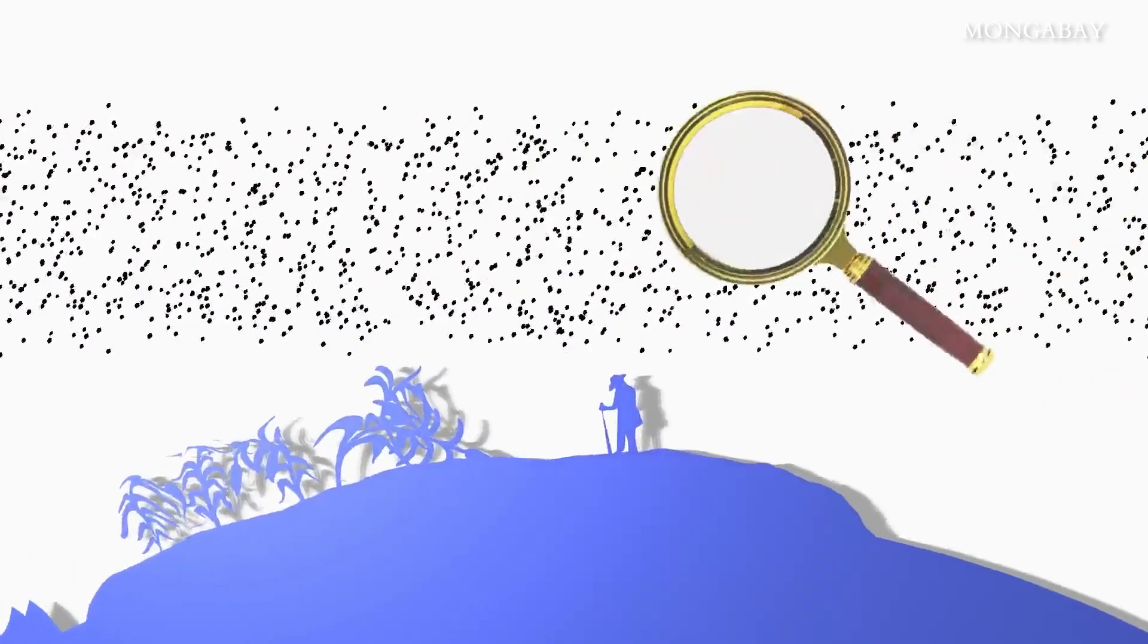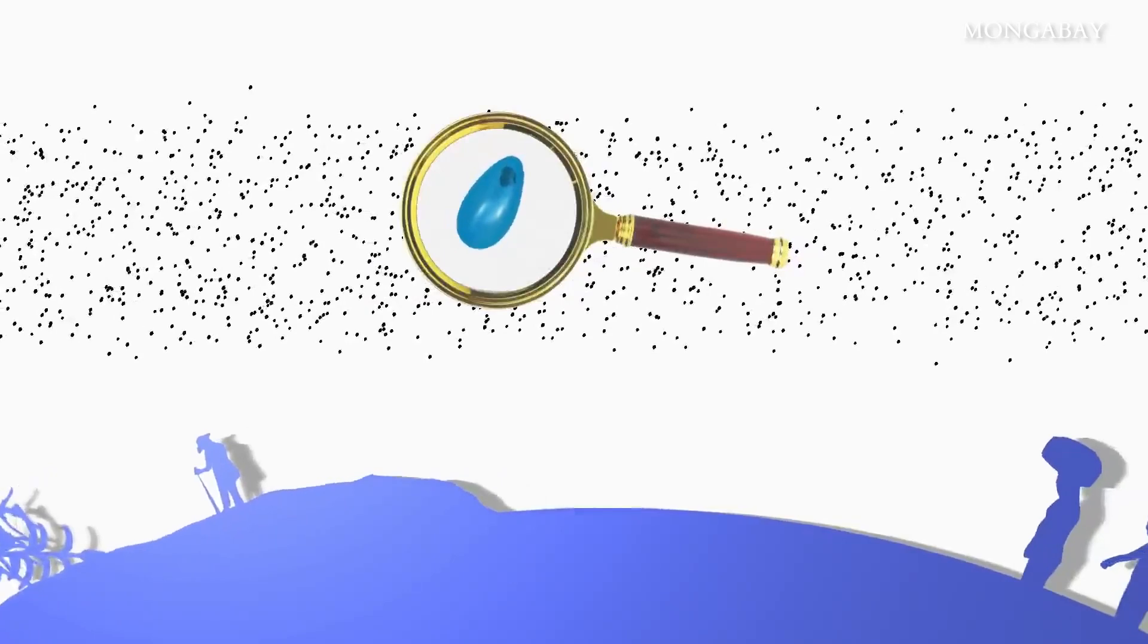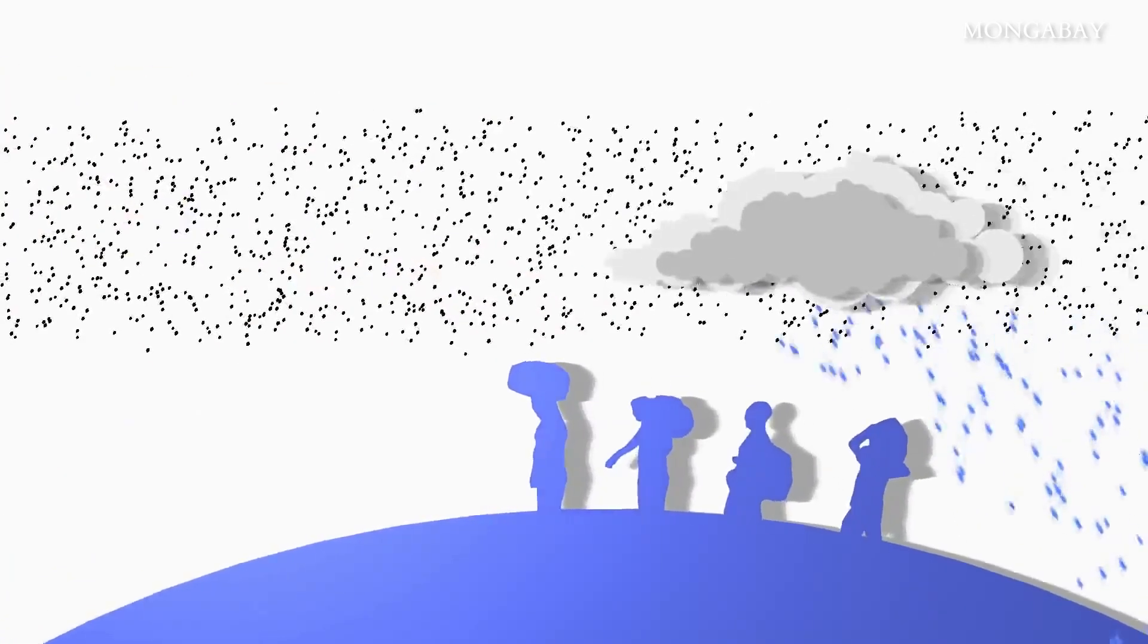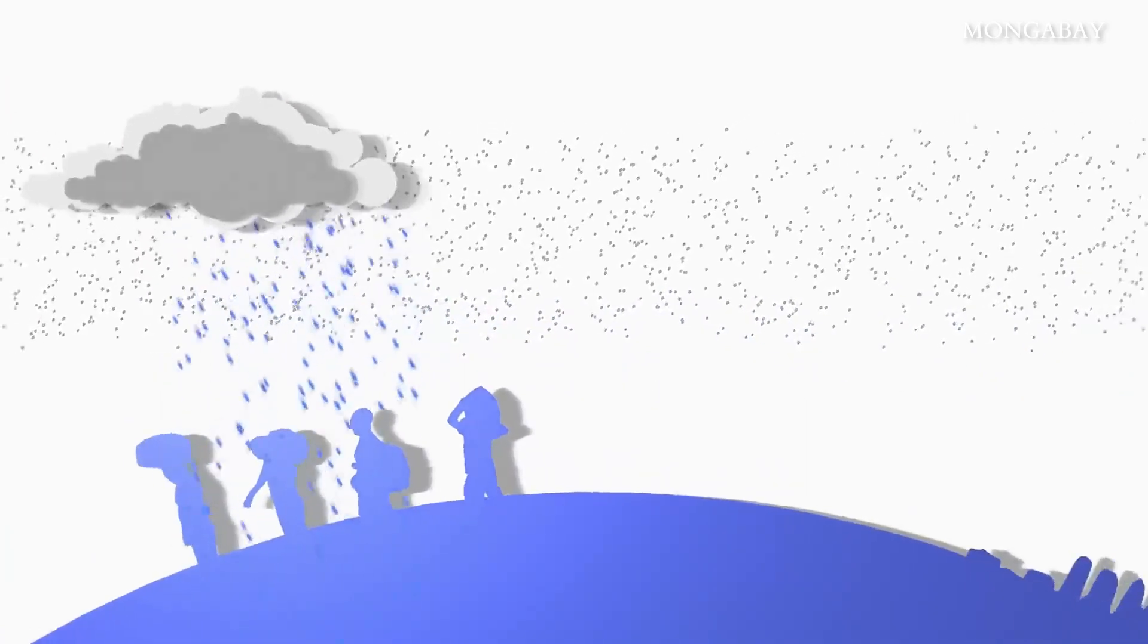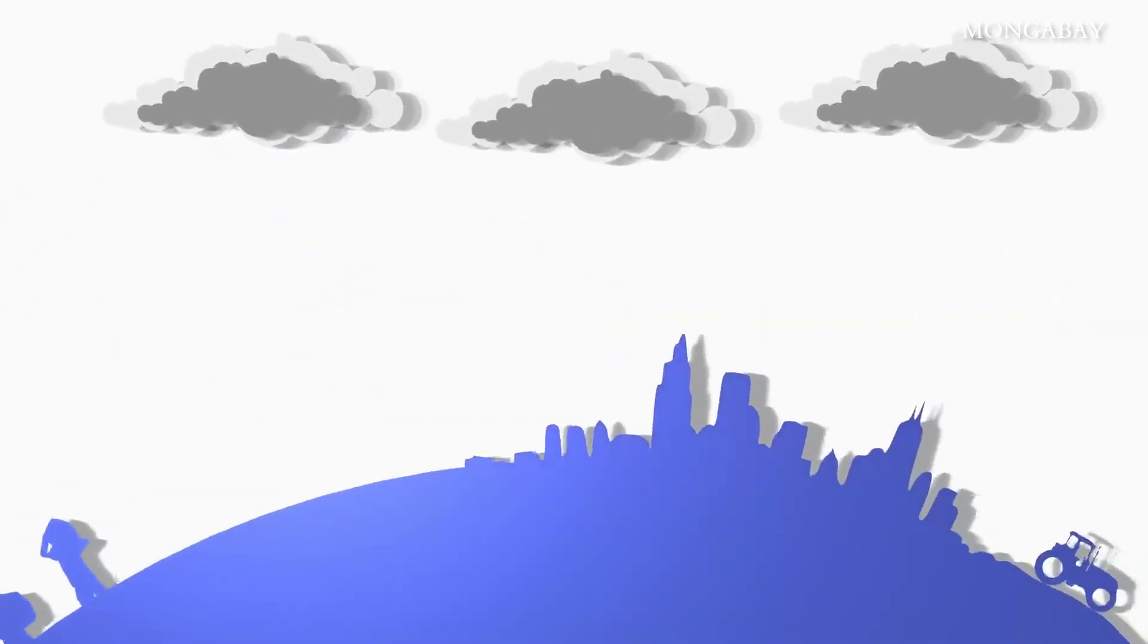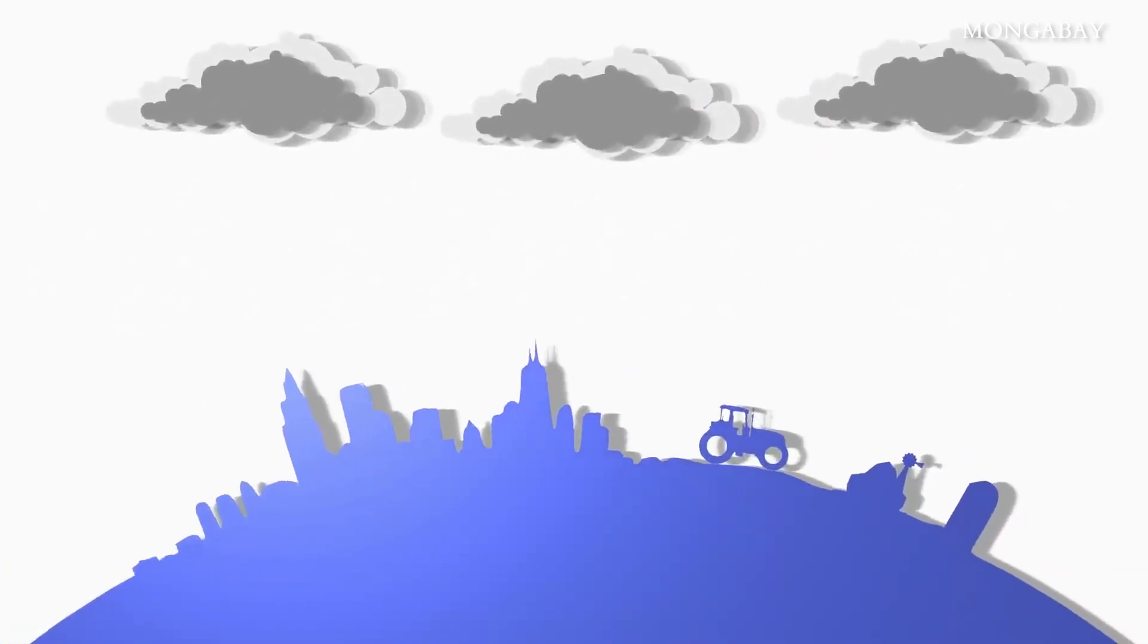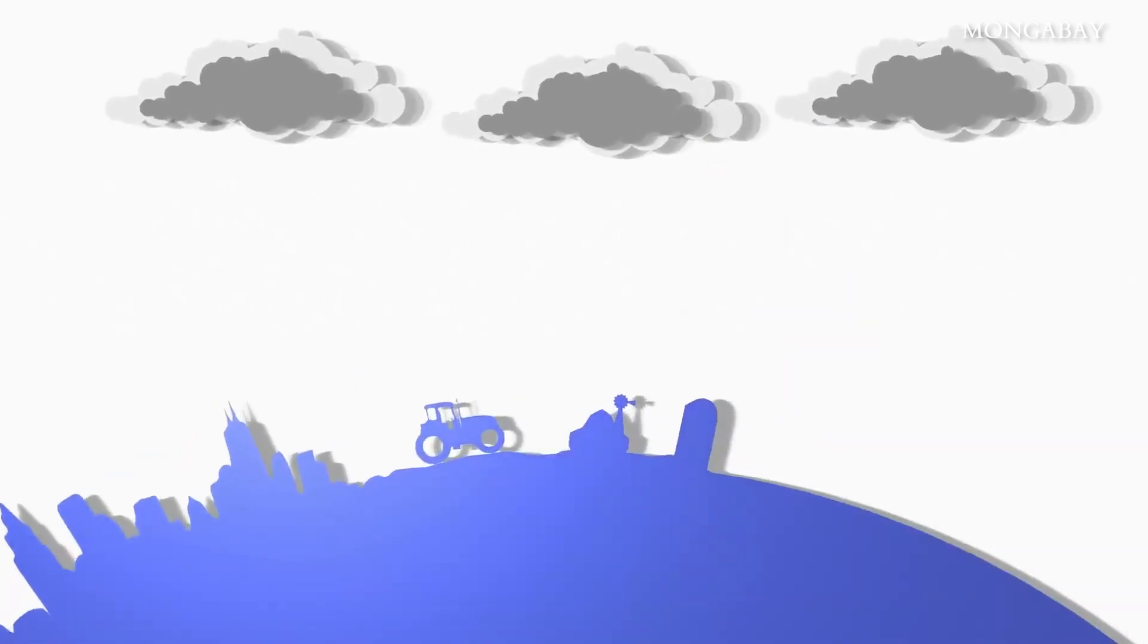Another way aerosols reduce precipitation is when cloud water droplets cling to the particles instead of falling to the ground. This might reduce rainfall at first, but it could also just delay it, leading to stronger rainfall elsewhere. Aerosols can even cause thunderstorms by holding onto droplets longer, allowing moisture-laden clouds to rise up higher in the atmosphere, forming thunderheads. In the U.S. Midwest, thunderstorms occur most often at midweek when urban pollutants are at their worst.